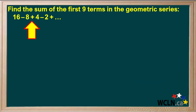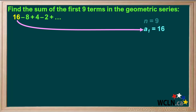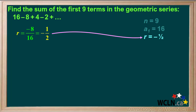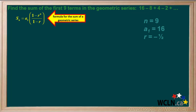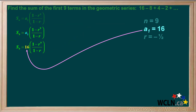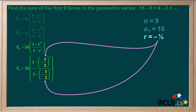Let's do one more example. We are asked to find the sum of the first nine terms of this geometric series. Because we are asked for the sum of the first nine terms, we can say that N equals 9. The first term, A1, is equal to 16. To find the common ratio R, we divide the second term, negative 8, by the first term, 16, which gives us negative 1 half. So R equals negative 1 half. We can use the formula to find the sum, putting in 9 for each N, 16 for A1, and negative 1 half for each R.